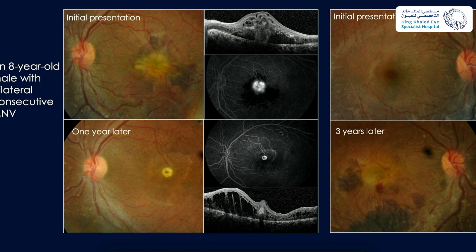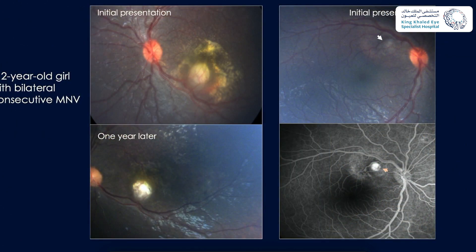An eight-year-old male presented with bilateral consecutive macular neovascularization, initially with decreased vision in the left eye. The left fundus showed subfoveal neovascularization with subretinal hemorrhage and leakage on fluorescein angiography. The patient underwent subretinal membrane peeling and TPA injection, and the lesion involuted into a fibrotic nodule. Three years later, he presented with new macular neovascularization in the fellow eye. A two-year-old girl also presented with bilateral consecutive MNV; her right fundus already showed a fibrotic nodule in a symmetric macular location.